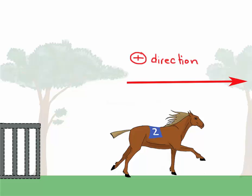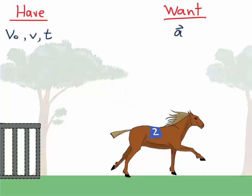We need to define a coordinate system. As usual we'll define to the right as positive and to the left as negative direction. Now let's list our unknown and known quantities.